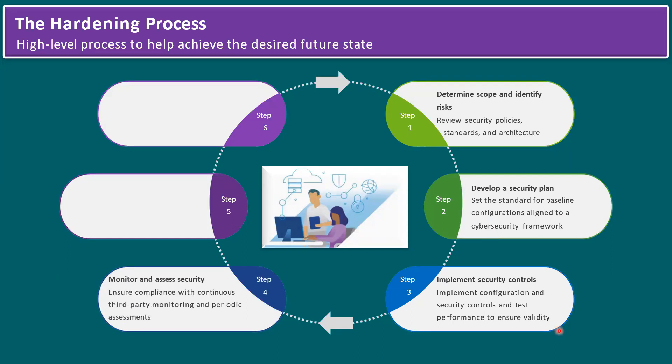Step four: monitor and assess security — ensure compliance with continuous third-party monitoring and periodic assessments. For monitoring, there are plenty of third-party tools. One example is SolarWinds NPM (Network Performance Monitor). For VMware, the monitoring tool is Aria Operations — previously called vRealize Operations Manager. Using Aria Operations we can manage the entire IT infrastructure, including servers, networks, and storage devices, and also perform periodic assessments.